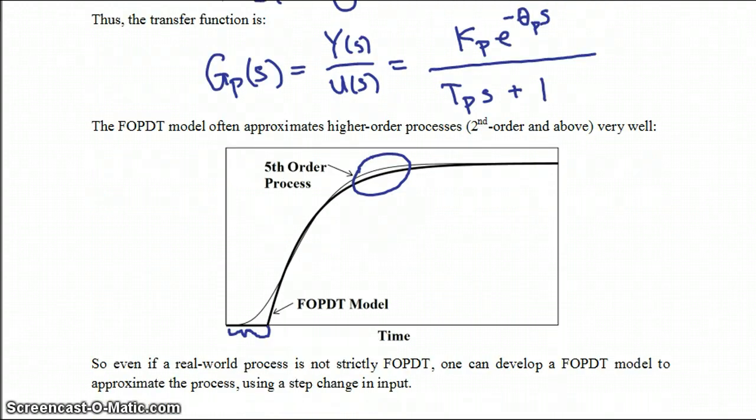Whereas in the fifth order process you actually do have some change although it is sluggish in the beginning. And this is why the first order plus dead time model actually fits higher order processes rather well.